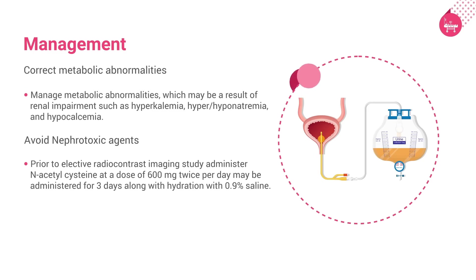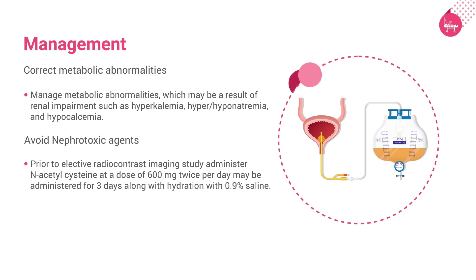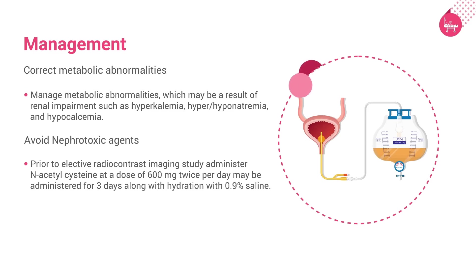Avoid nephrotoxic agents. Prior to elective radiocontrast imaging, administer N-acetylcysteine at 600 mg twice per day for 3 days along with hydration with 0.9% saline. Avoid nephrotoxic antibiotics. Aminoglycosides, if used, should be dosed once daily. Intravenous aciclovir may cause crystal nephropathy. High-dose mannitol may lead to osmotic nephropathy. NSAIDs should be avoided.